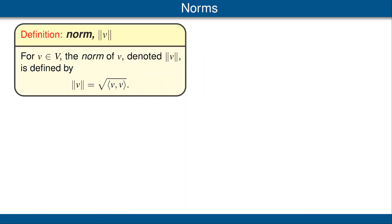Recall that V denotes an inner product space. We now define the norm on an inner product space by defining the norm of a vector to be the square root of the vector's inner product with itself. Because a vector's inner product with itself is a non-negative number, we of course mean the non-negative square root here.